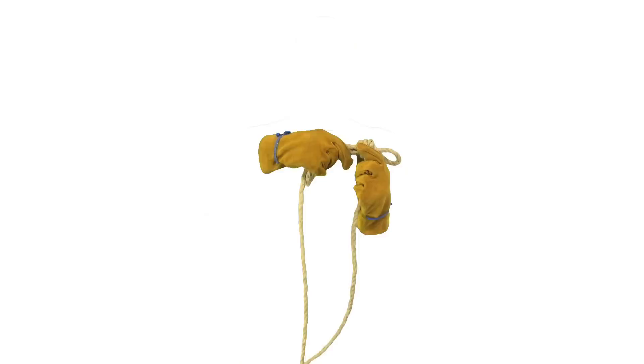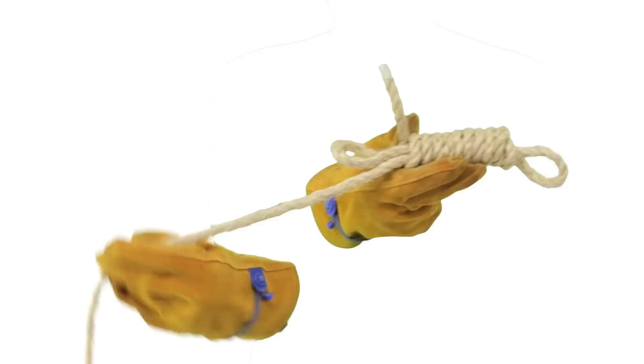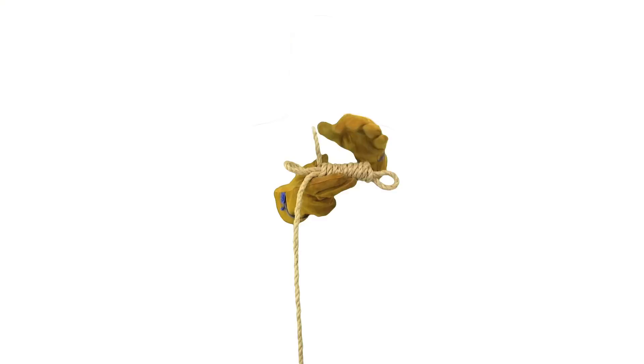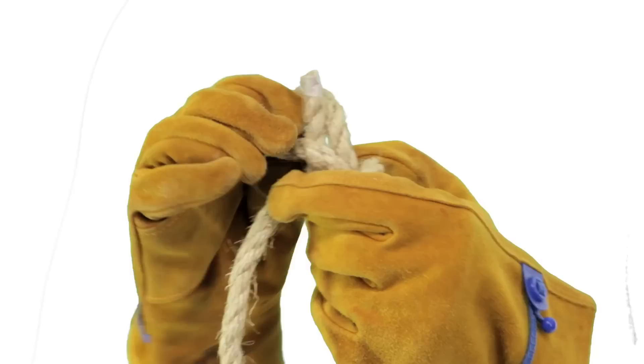At this point, you'll have two loops protruding from both the length end and the working end of the rope. You'll also have a little leftover rope. Simply thread this last length of rope through the loop, and you're ready to tighten your noose.